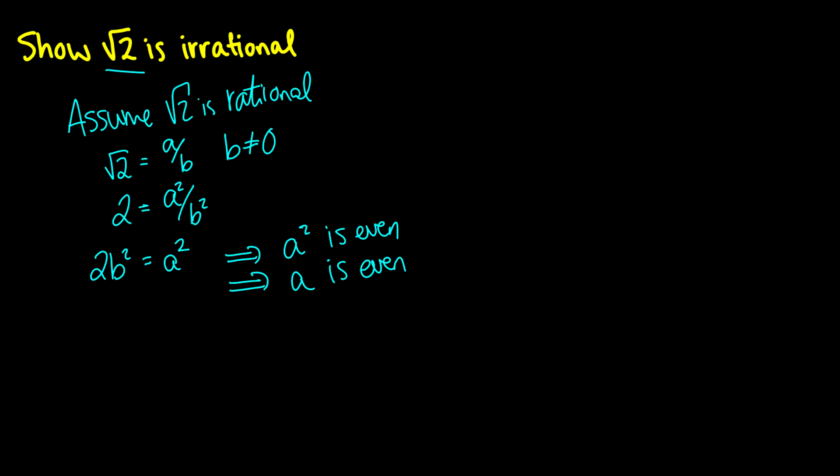So because of this, we can say that a is equal to some number 2 times k. So we'll rewrite a, we'll still take our 2b², and we will rewrite it as 2k squared, which really is going to be the same thing as just 4k². And now b² is going to be equal to 2k².